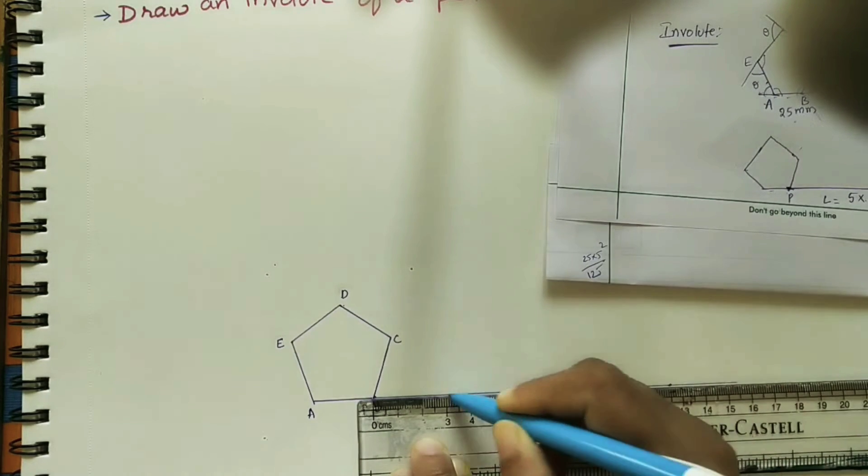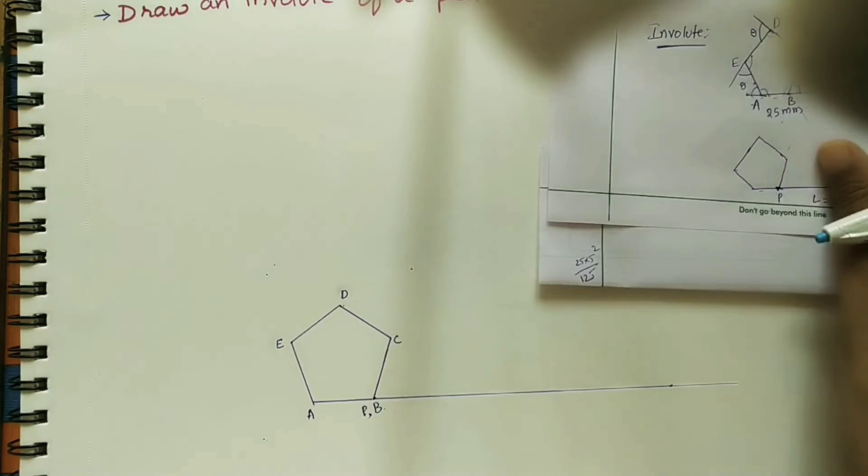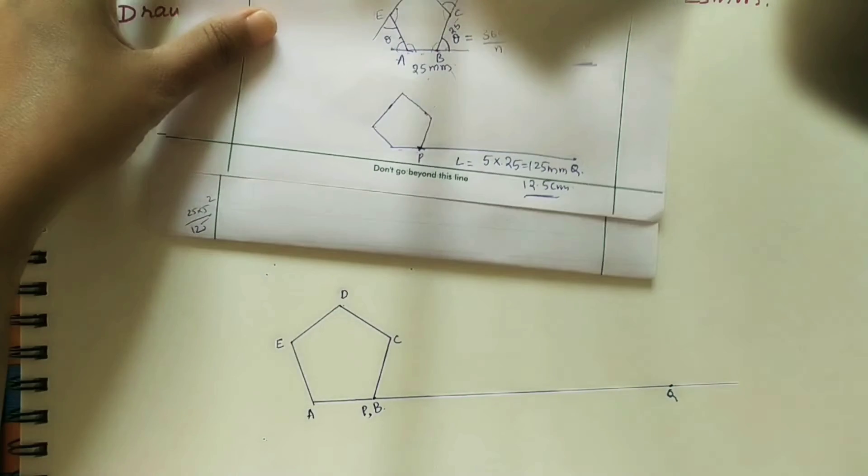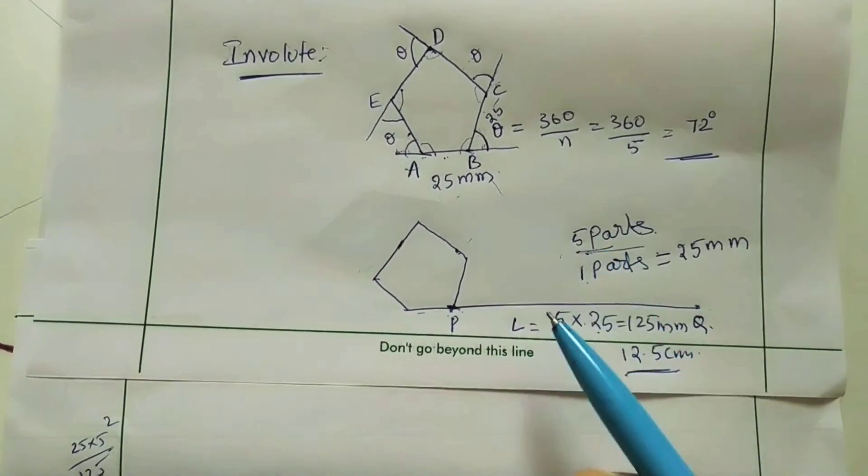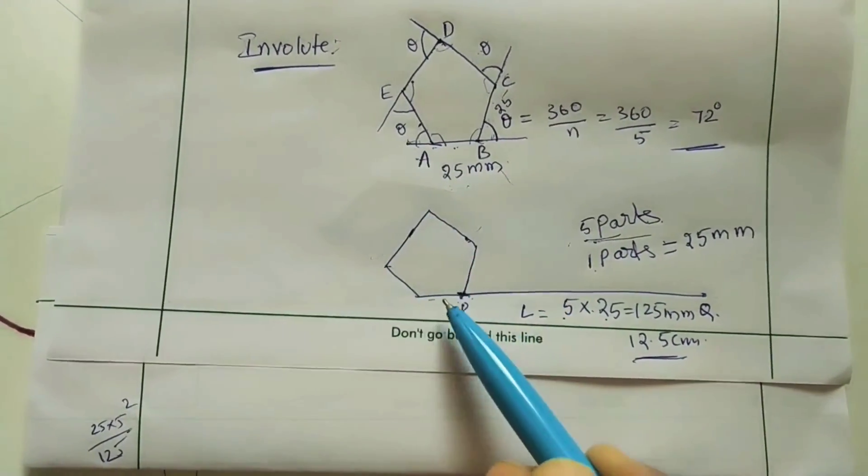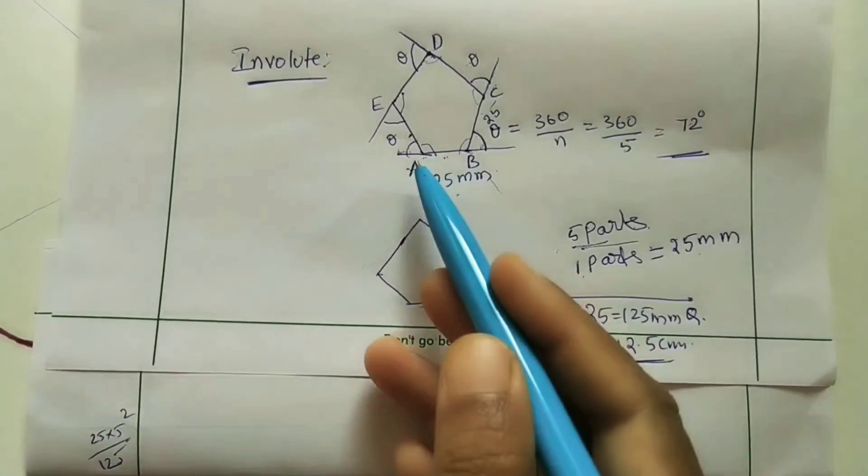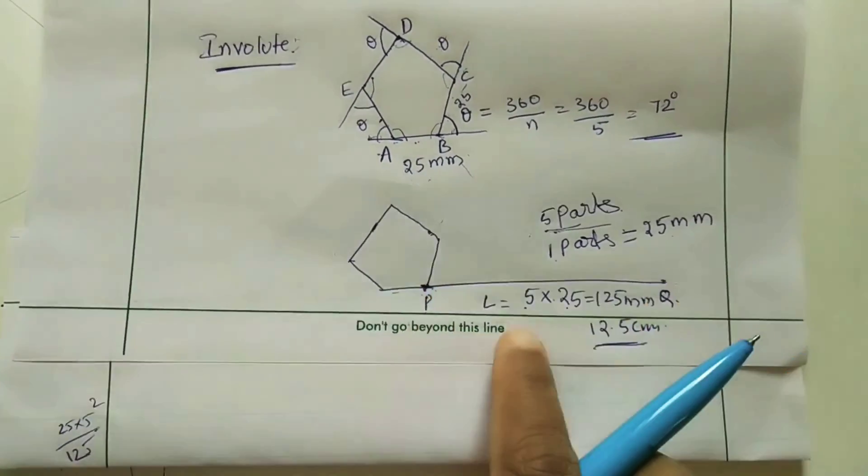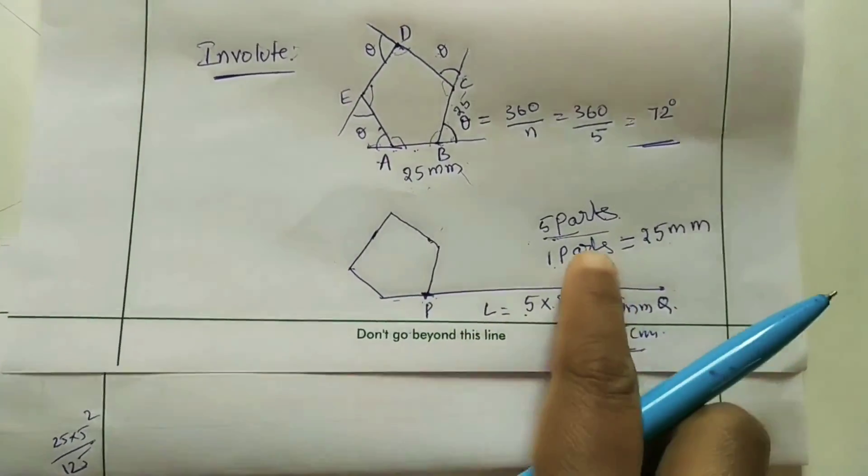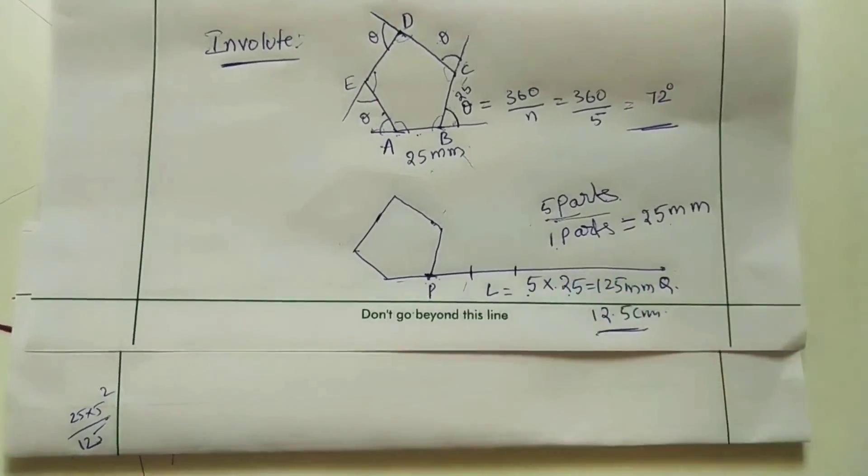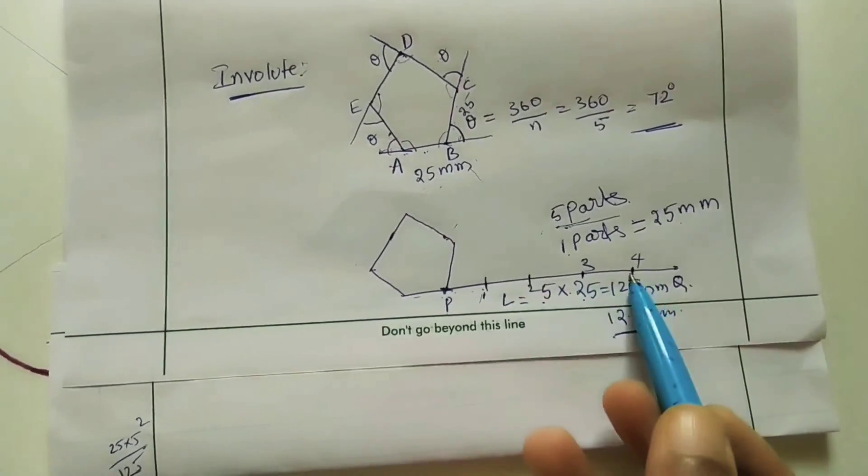Make it dark. Mark the endpoint as Q point. PQ length is 12.5cm. We have to divide PQ length into five parts because the pentagon has five sides. Each part is 2.5cm, that is the side length of the pentagon. PQ into 5, here we have to divide into five parts, each part is 25. First part, second, first, second, third, fourth, fifth.